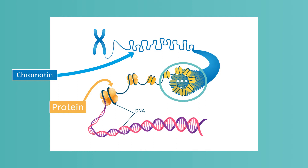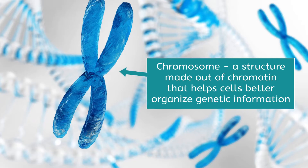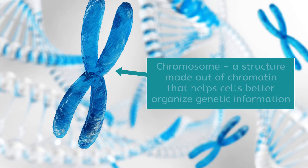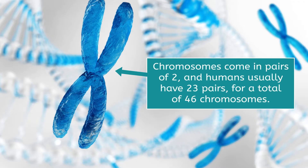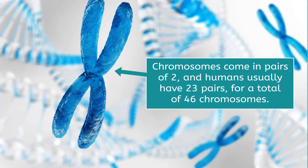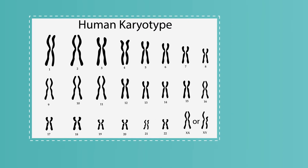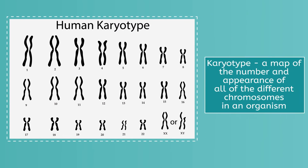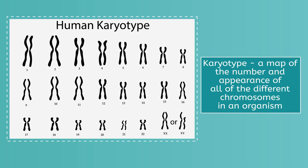Additionally, all of this chromatin is divided into large sections called chromosomes. A chromosome is a structure made out of chromatin that helps cells better organize genetic information. Chromosomes come in pairs of two, and humans usually have 23 pairs for a total of 46 chromosomes. You can see the visual representation of an organism's chromosomes using a karyotype, which is a map of the number and appearance of all of the different chromosomes in an organism. Scientists use karyotypes to better understand how DNA is organized in living things.